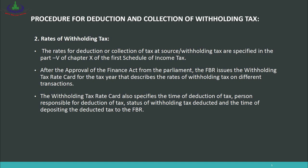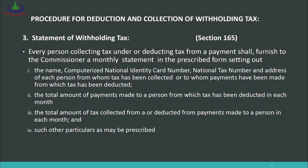The withholding tax rate card specifies the rates applicable on different transactions. It also specifies: the time of deduction of withholding tax, the manner of deduction, the status of withholding tax — whether it is adjustable or not, the person responsible for deduction, and the time of deposit of this withholding tax to FBR. It is necessary to download the withholding tax rate card from the FBR website for guidance on applicable rates and status.